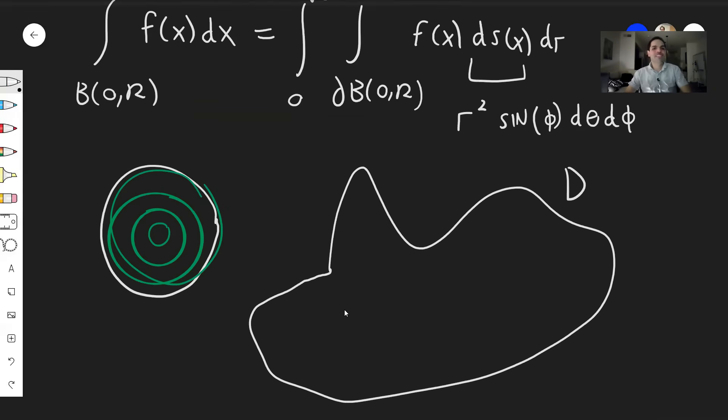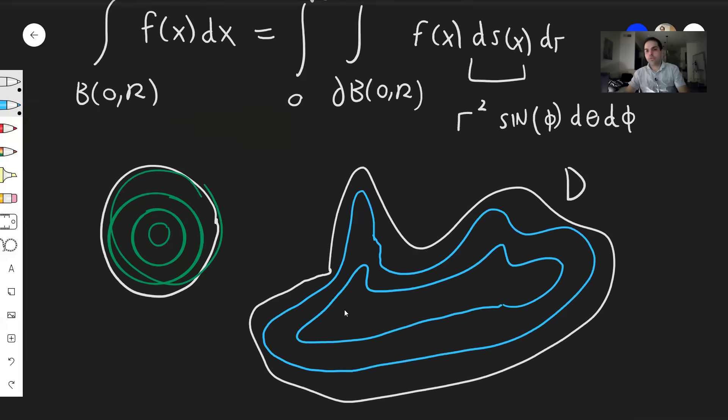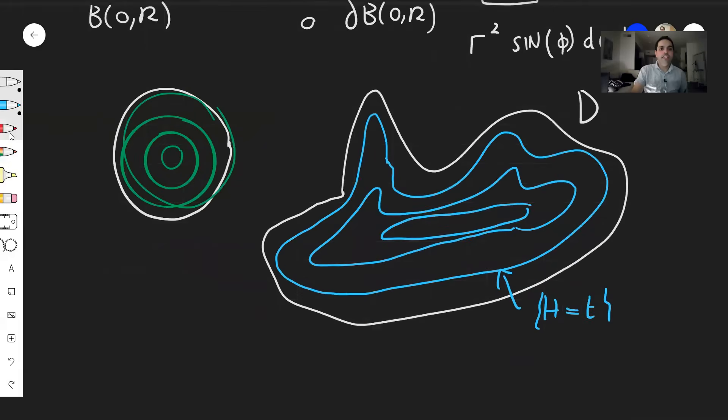Okay. Again, smooth, even though it doesn't look like that way. Well, suppose you can decompose D into level surfaces or just think shells, where the level surfaces are just given by H equals T. All right, so you have this function H and the surface level surface is given by H equals T, then the co-area formula tells you the following.